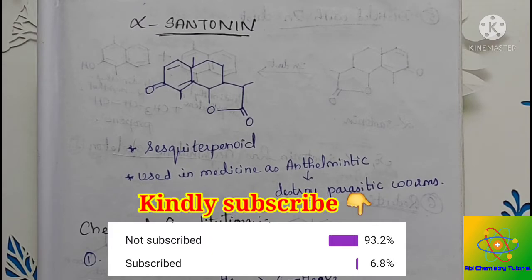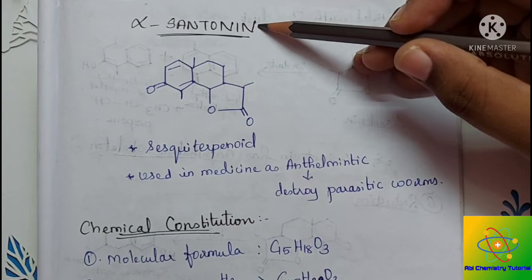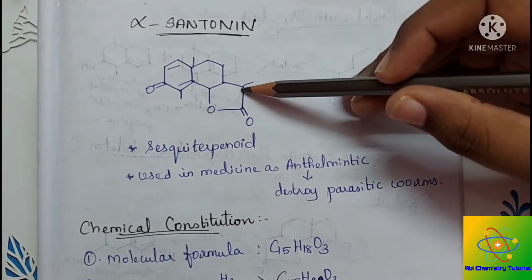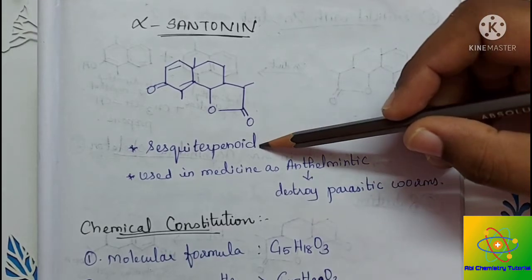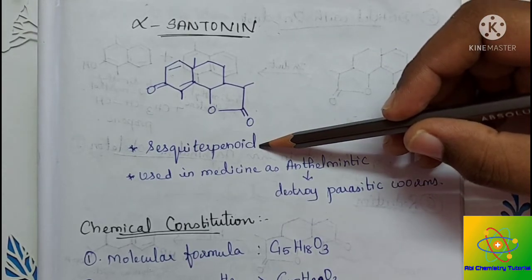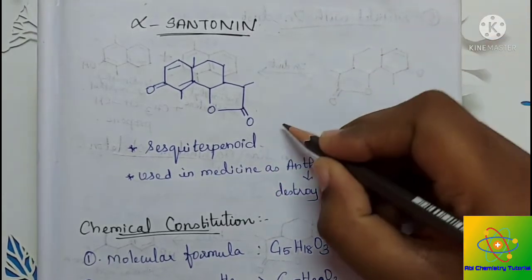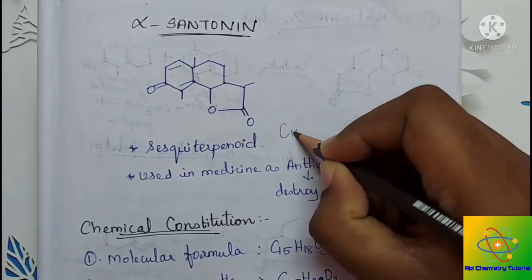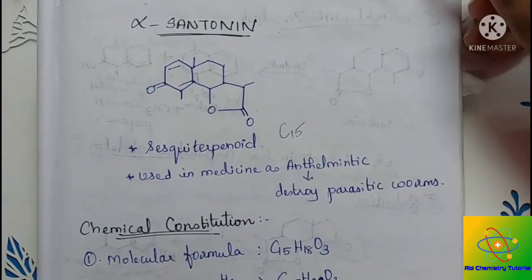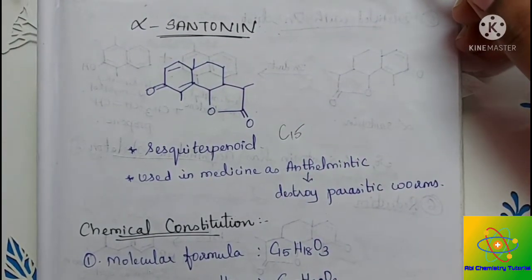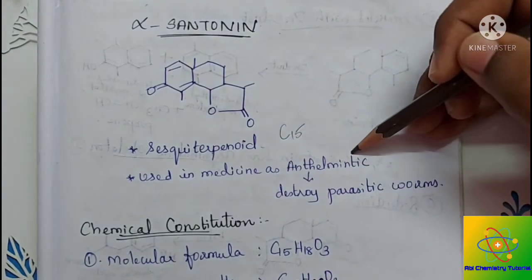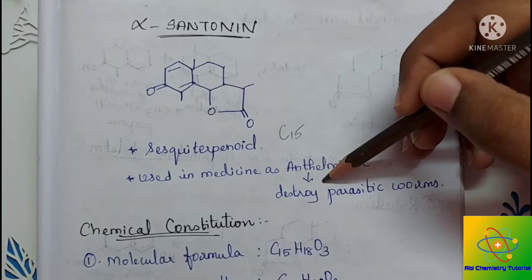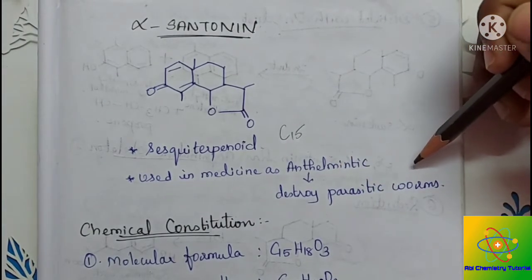I hope you subscribe and now let's get started. Alpha-santone — as you can see, this is the structure of alpha-santone. It is a sesquiterpenoid, that is, it has 15 carbon atoms, so for C15 we say it is sesquiterpenoid. It is used in medicine as an anthelmintic, that is, it is used to destroy parasitic worms.